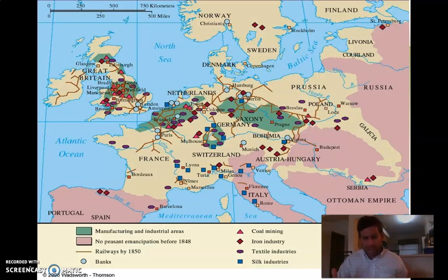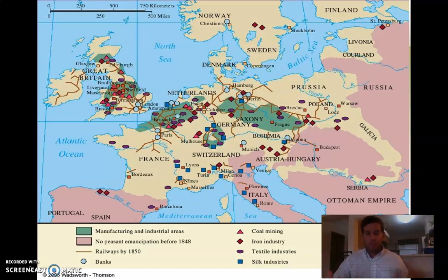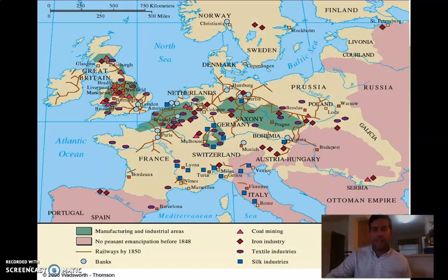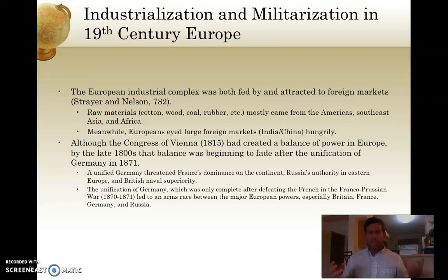We left off talking about industrialization — about socialism, about Marx and his ideas. Beginning in the late 18th and early 19th century, different regions of Europe industrialized at different times, led by Great Britain, which was the first to industrialize, then parts of northern France and what would become Germany. Industrialization advanced European nations far beyond many other nations of the world, including the United States, until the U.S. caught up later in the 19th century. There are really two big outcomes of industrialization on a global scale.